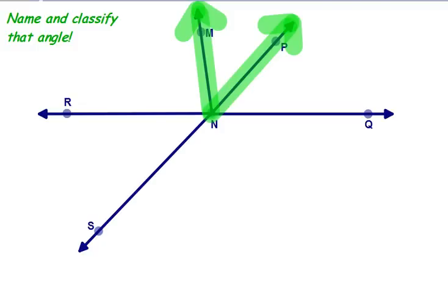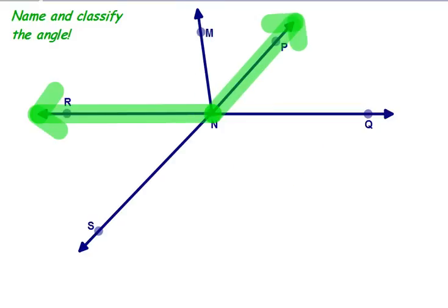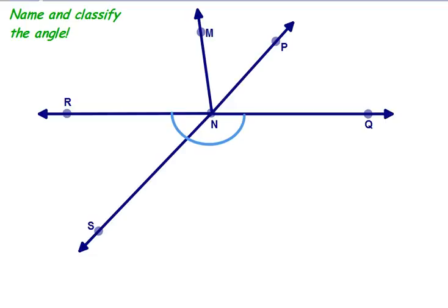Name and classify each angle. This is angle MNP - notice the vertex is in the middle - and it is an acute angle. This is angle RNP, which could also be angle PNR. It is an obtuse angle because it's greater than 90 degrees.